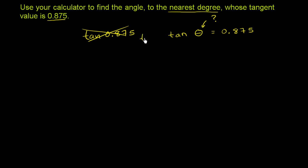So if you take the inverse tangent of this - let me clear this out a little bit - you take the inverse tangent of both sides, 0.875.